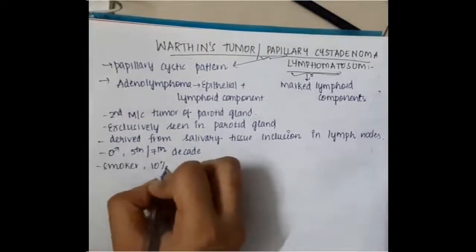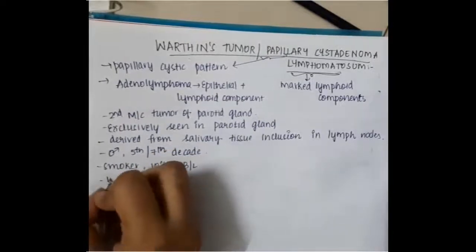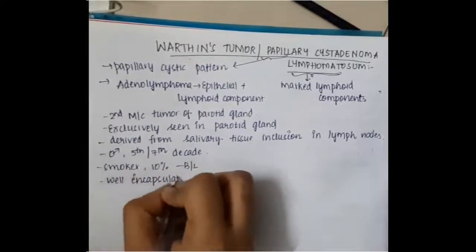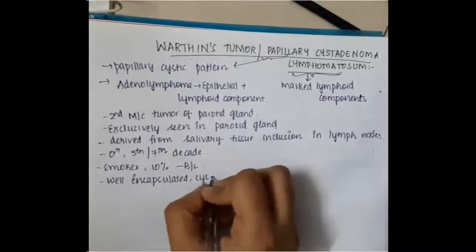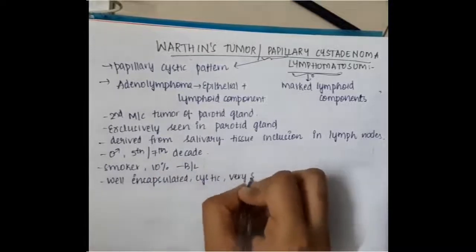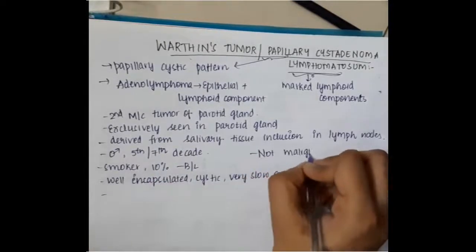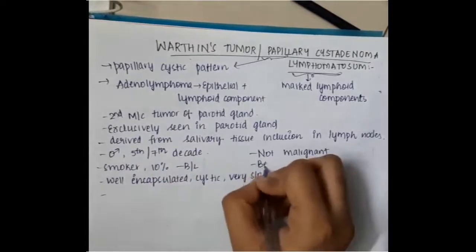It is seen in males in the 5th to 7th decade, in smokers, and it is 10% bilateral. It is well encapsulated, cystic, and shows very slow growth.